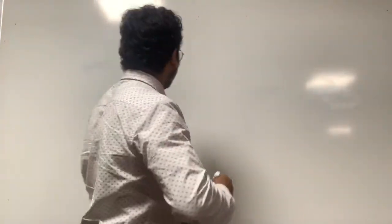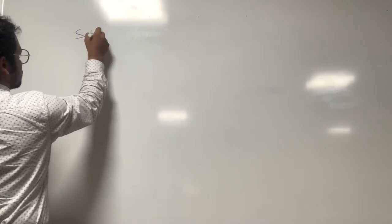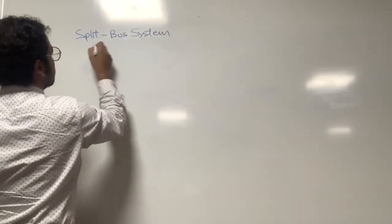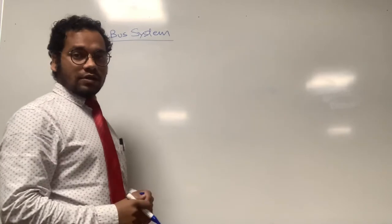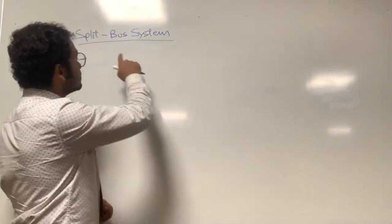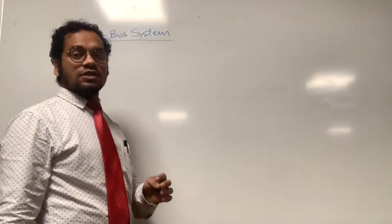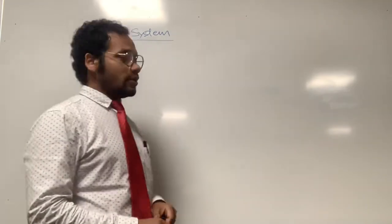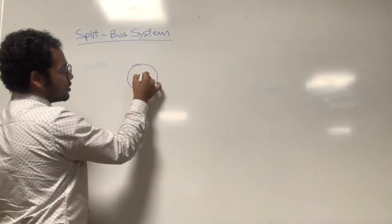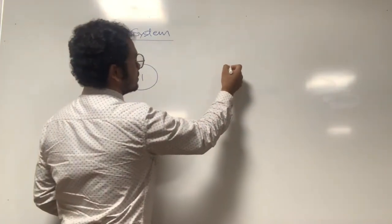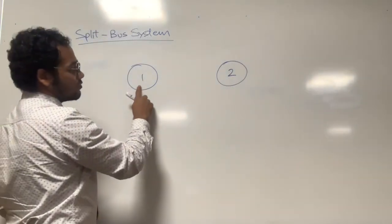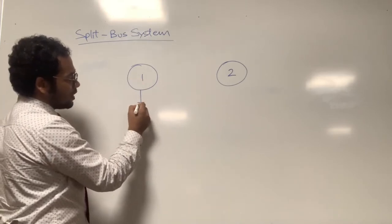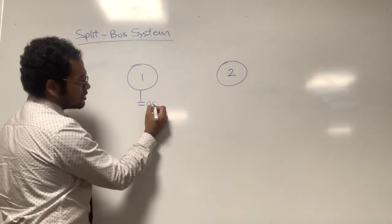Now let's discuss in detail about the split bus bar system. The split bus system is used in twin-engine commercial planes, which obviously have two generators — one mounted on each engine. So we have generator 1 and generator 2. This generator, when running, will develop a power supply and will be connected by means of a breaker called the generator circuit breaker, or GCB.